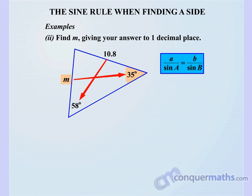So the m matches up with the 35 degrees, so we write m over sine 35 degrees. And the 10.8 matching up with the 58 degrees, so it equals 10.8 over sine 58 degrees.